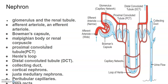The tubule continues further to form a highly coiled network. The first part is the proximal convoluted tubule (PCT), then the loop of Henle, then the distal convoluted tubule (DCT), and then the collecting duct. You can see all these parts in the diagram — proximal is the anterior part, distal is the posterior part.